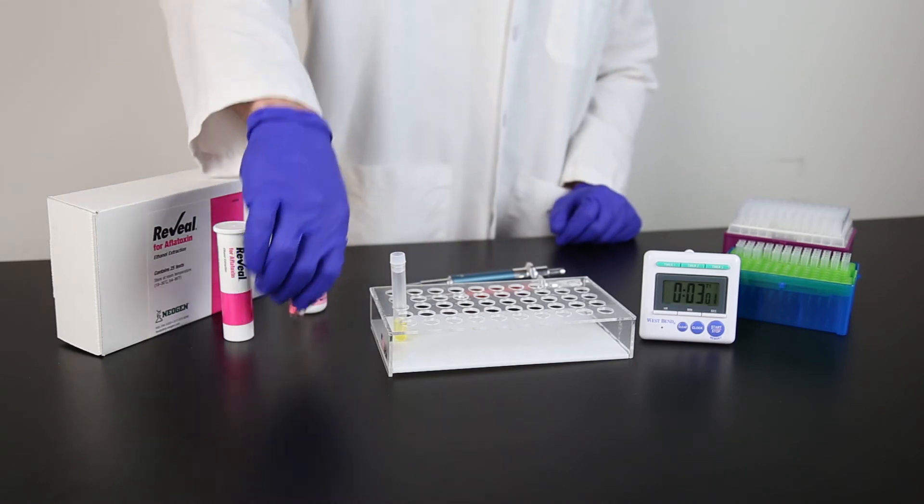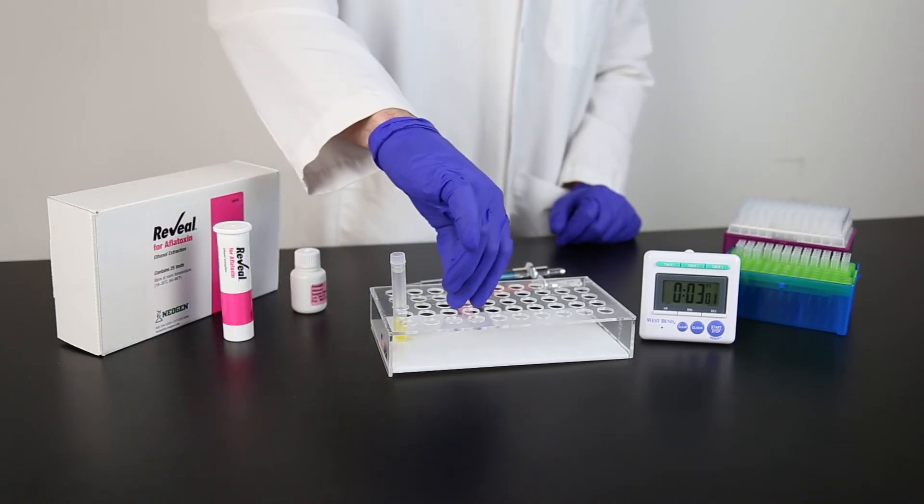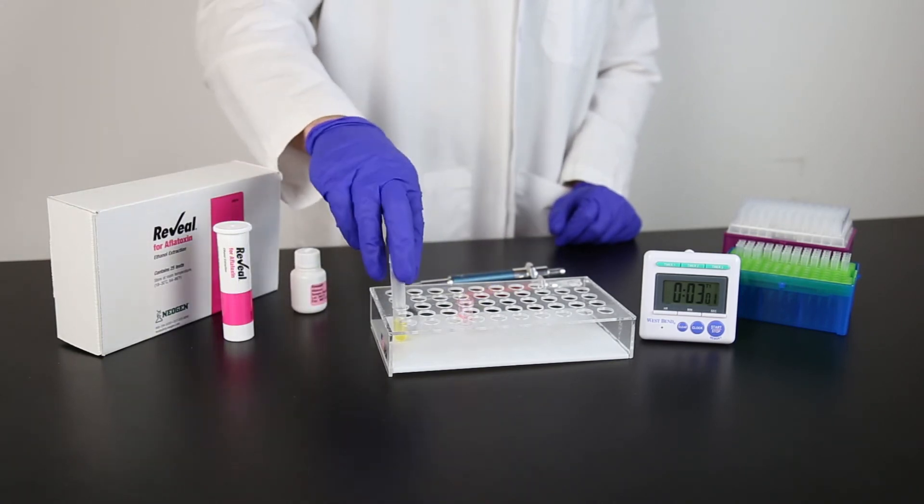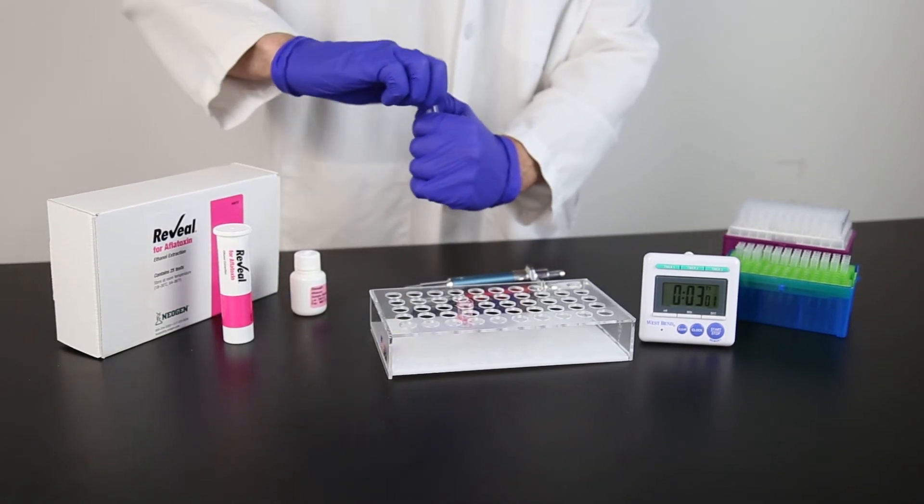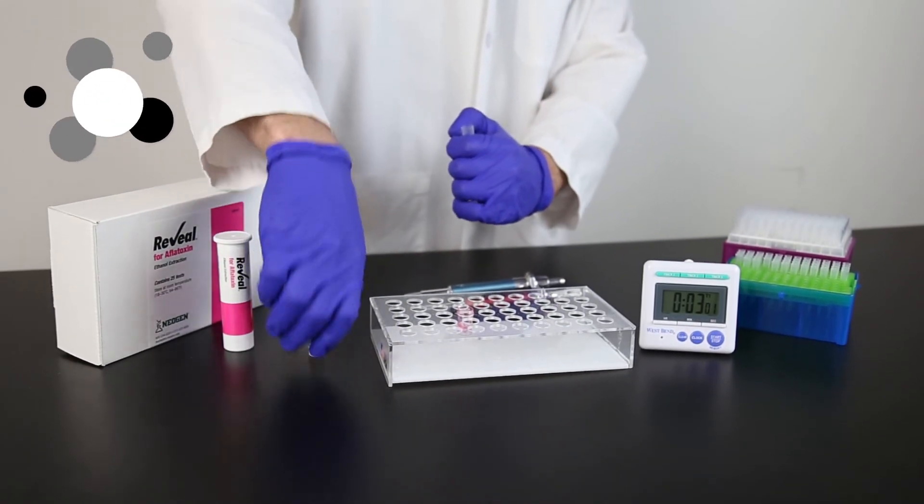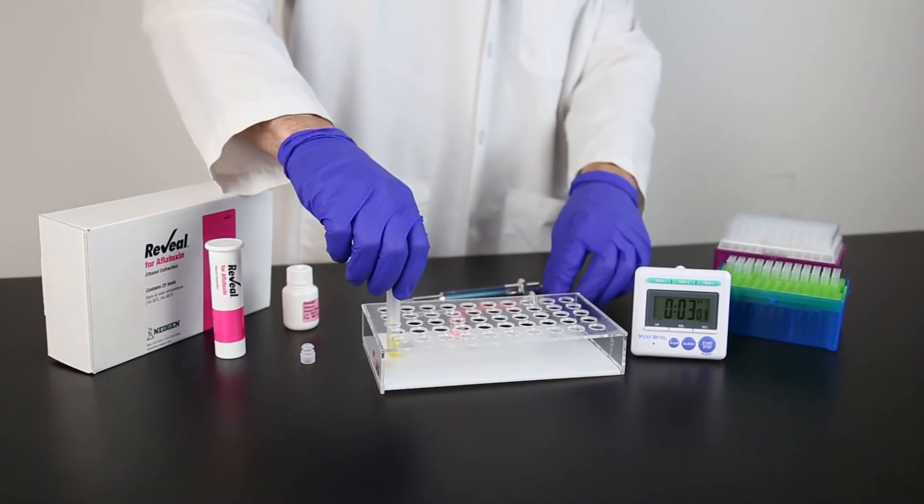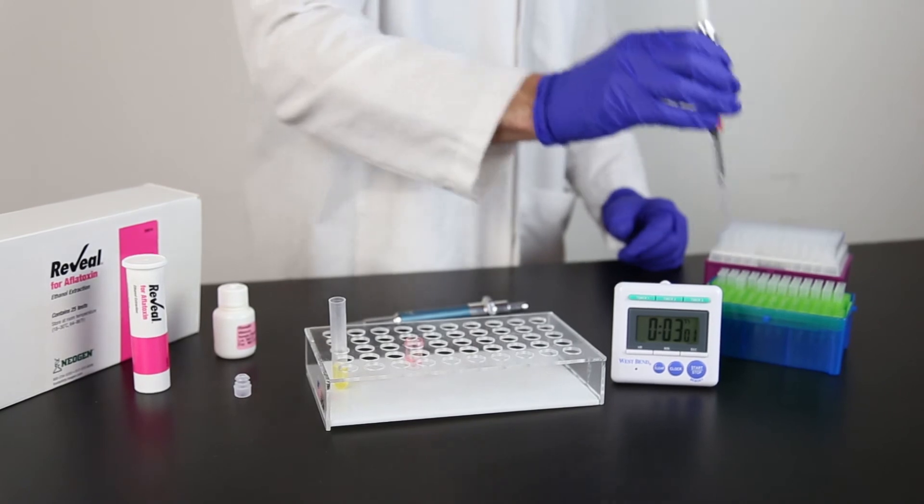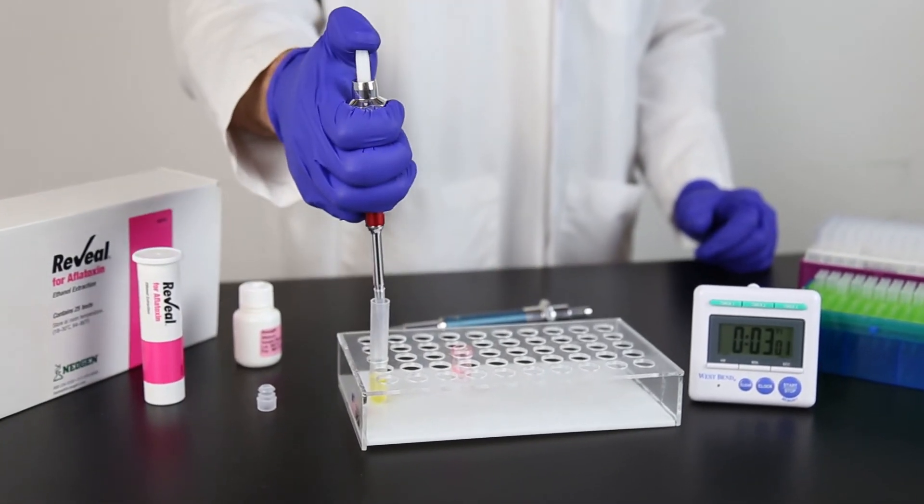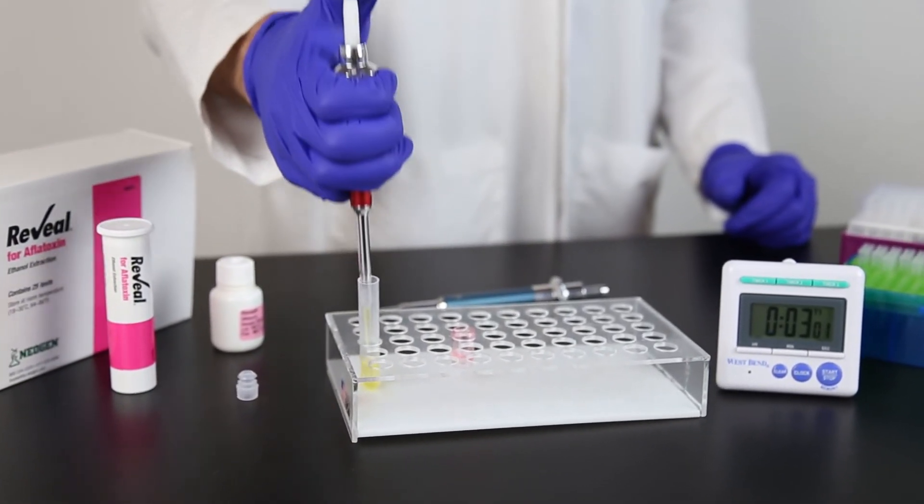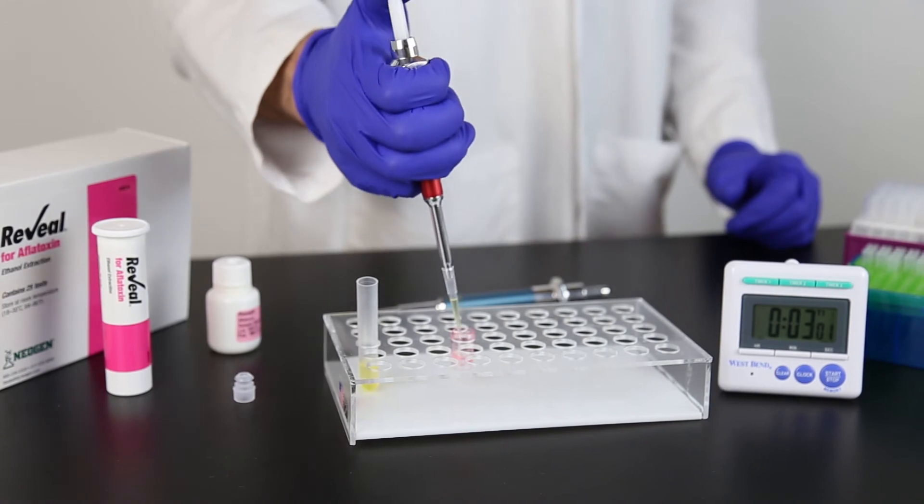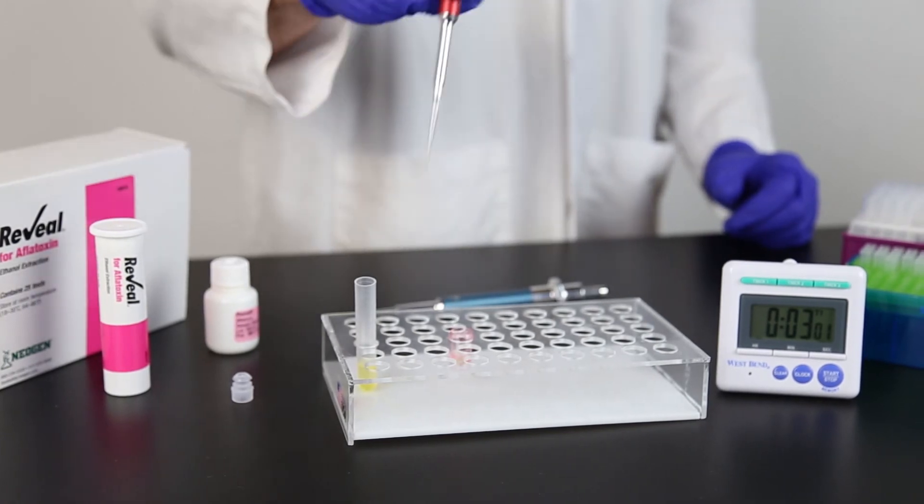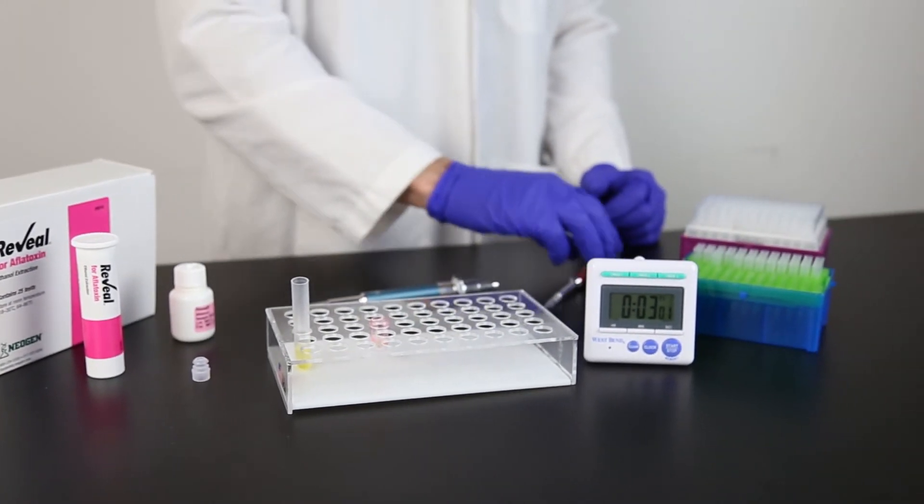For each sample you are testing, place a sample cup in a Reveal sample cup rack. Add 100 microliters sample extract to the sample cup. It is important to make sure the pipette tip is fully charged with liquid and doesn't have any air bubbles prior to dispensing the liquid into the cup.